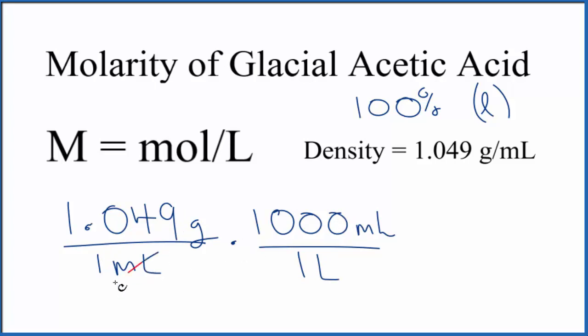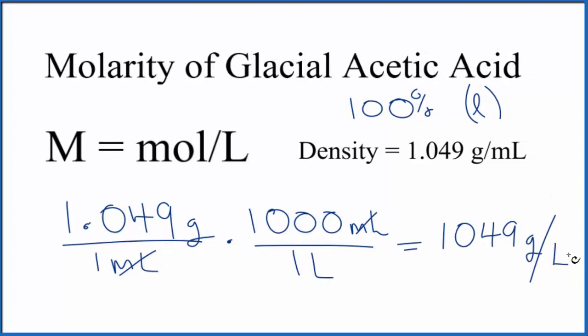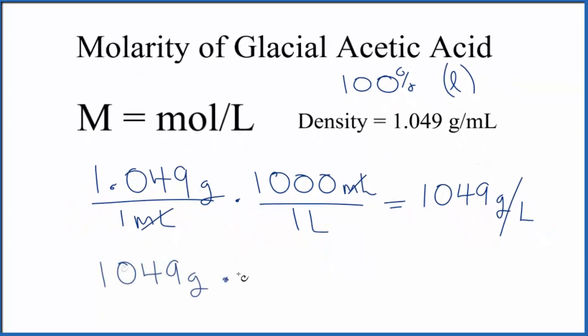Milliliters cancel out, so we have grams per liter. Now we're close—we have liters here, we just need to convert grams to moles and then we'll be done. When we go from grams to moles, we divide by the gram formula mass. There's a link at the end of this video to help you figure out molar mass.